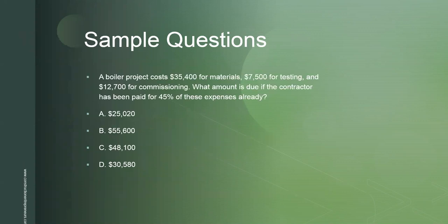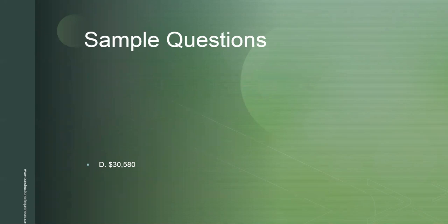Last sample question: A boiler work project costs $35,400 for materials, another $7,500 for testing, and $12,700 for commissioning. What amount is due if the contractor has been paid for 45% of these expenses already? A, $25,020. B, $55,600. C, $48,100. D, $30,580. The answer is D — $30,580.